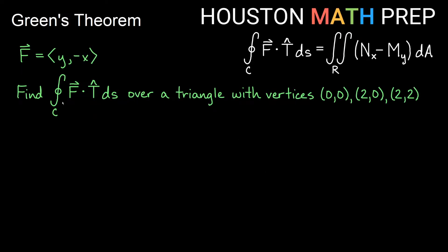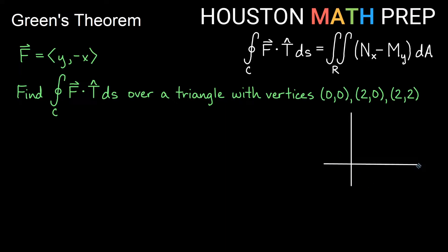Looking at our next example, we want to find the circulation over the closed curve that is a triangle with vertices (0, 0), (2, 0), and (2, 2). Our field this time is ⟨y, −x⟩. Let me sketch the triangle with those vertices.